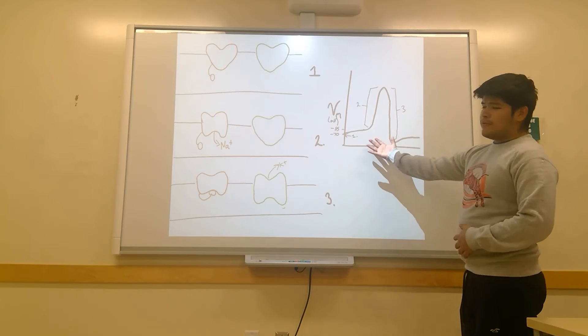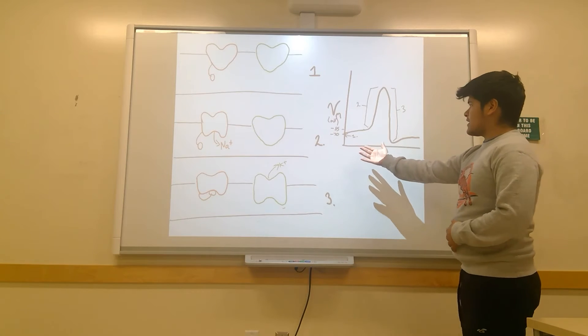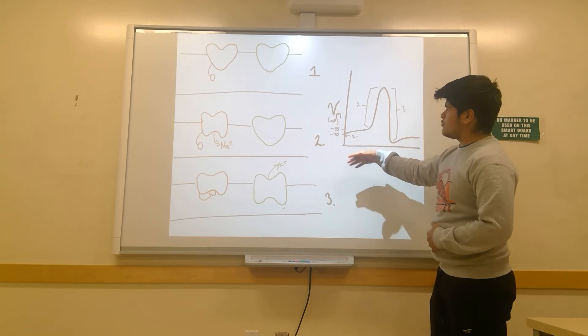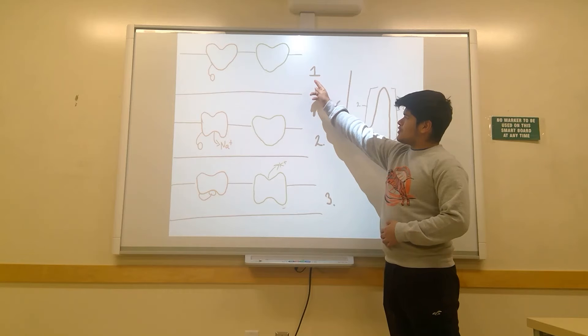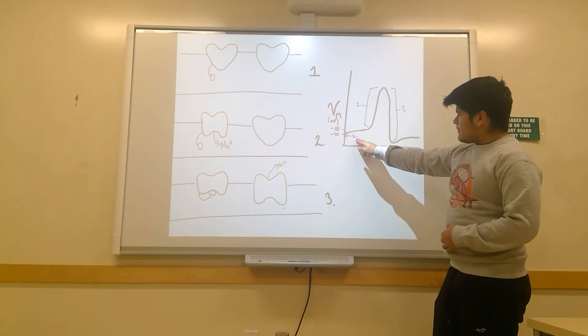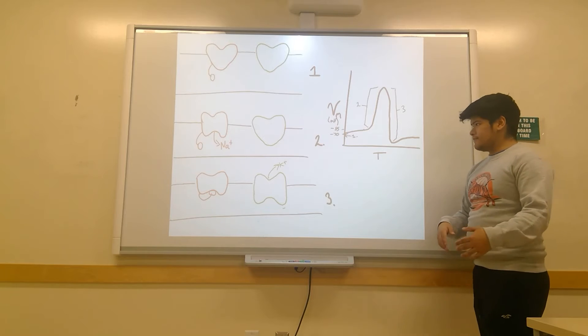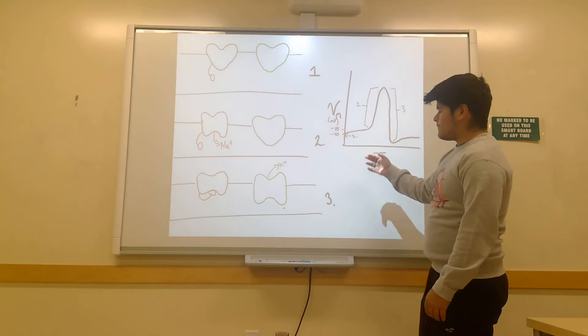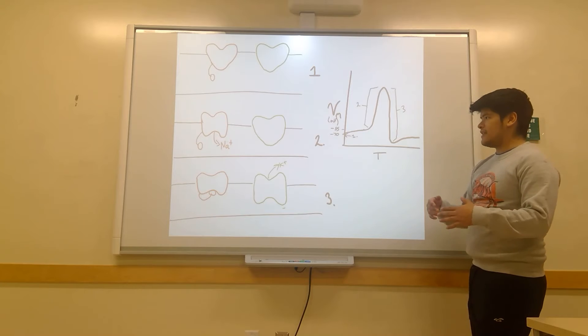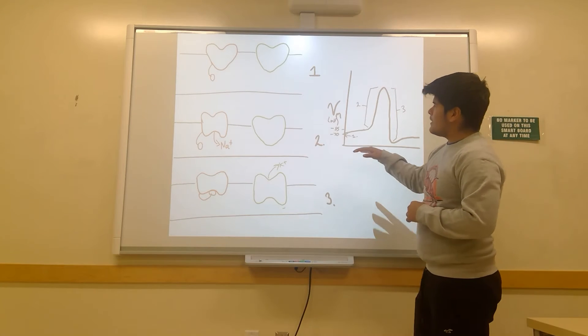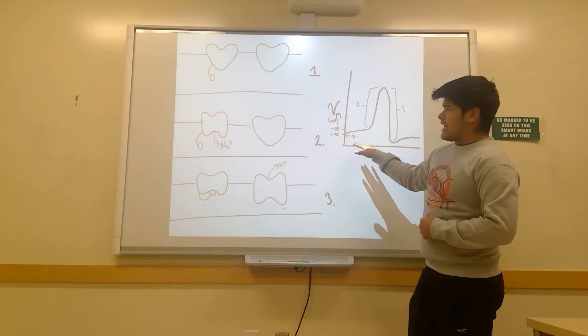Here we have the membrane potential chart that was shown just a second ago, and it's labeled 1, 2, and 3 corresponding with the visual demonstrations right here. At 1, you have a neuron that's at its resting state, negative 70 millivolts. There's no action potential, no stimuli of any sort when a neuron is in its resting state.